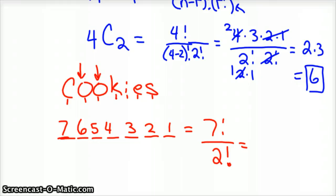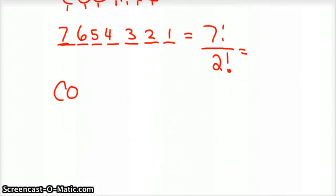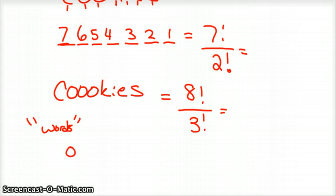But let's say it was cookies with three O's. Well, the word cookies with three O's, not that that's a word, that would be eight factorial, because now there's eight letters with the additional O, divided by three factorial. So you could have O, C, O, O, K, I, S, E. So there's an example of one of the examples of the many that we'd have here.